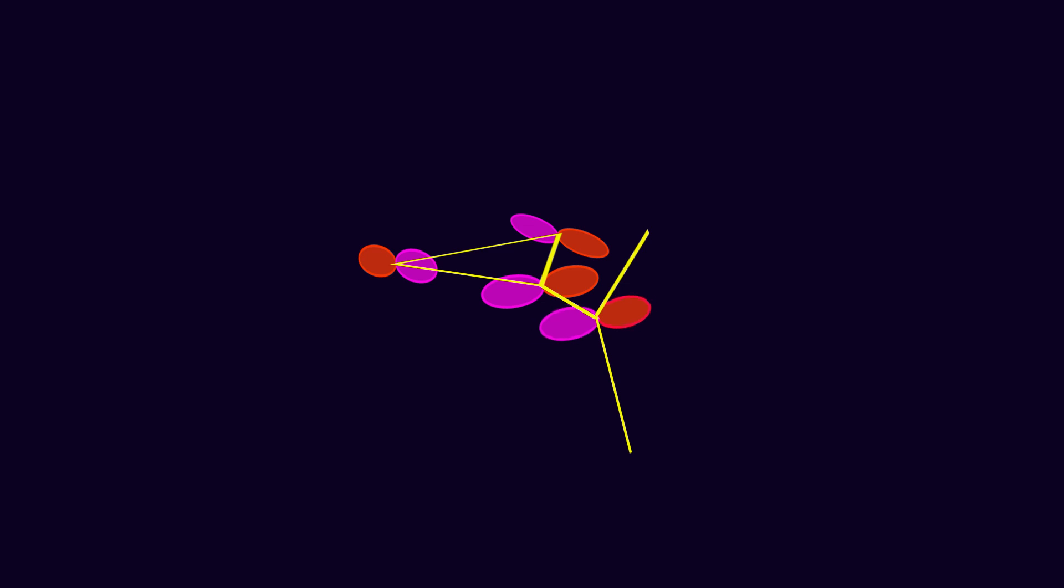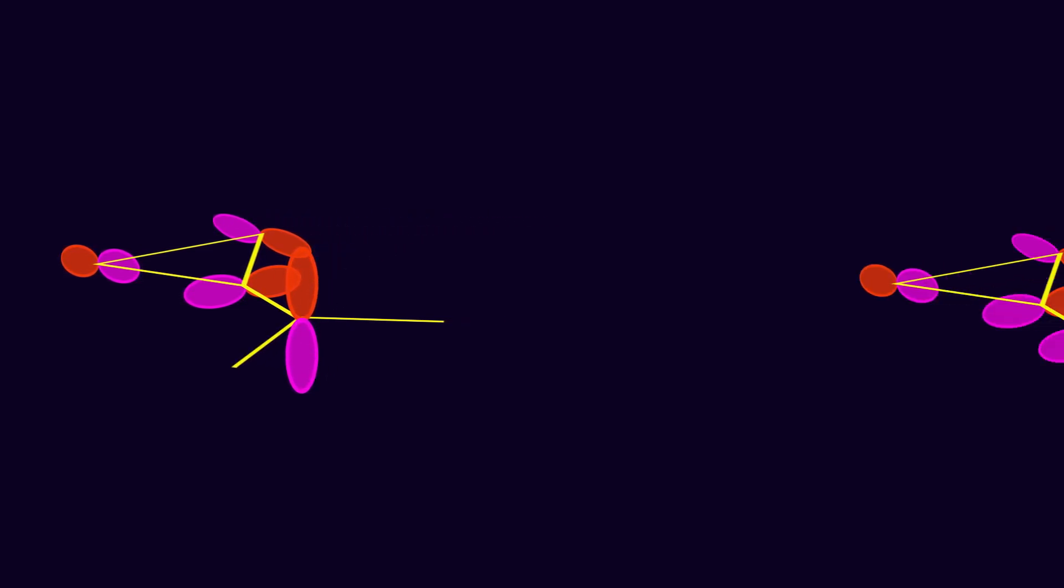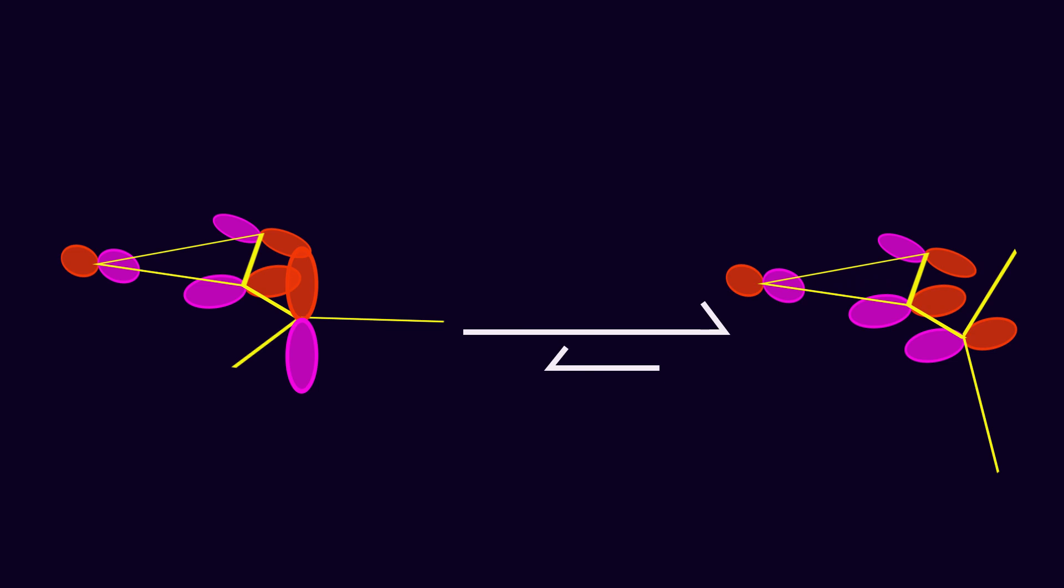The second conformation is called perpendicular, in which the empty p orbital is perpendicular to the plane of the ring. When two orbitals are orthogonal, the interaction cannot occur. Because of this stabilizing effect, cyclopropyl methylcarbocation prefers to adopt the bisected conformation.